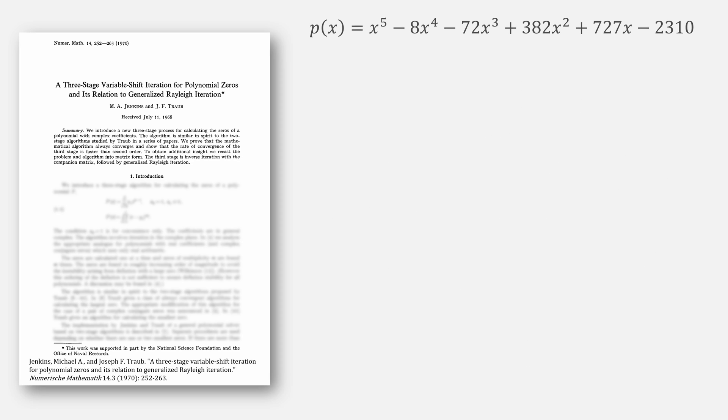If we take the example polynomial of x to the fifth minus 8x to the fourth minus 72x cubed plus 32x squared plus 727x minus 2310, Traub's g equation would help us converge to our largest root of 11. Traub's h equation would find our smallest one at two and Jenkins-Traub with skipping stage one and using a fixed stage two for our starting value of four converges on the root of five.